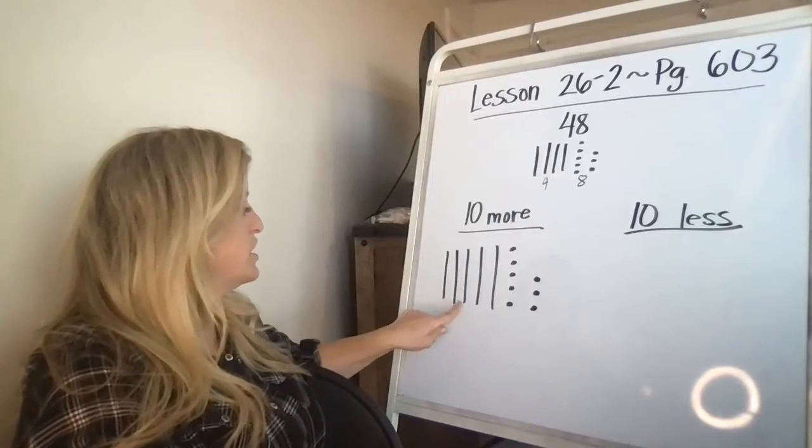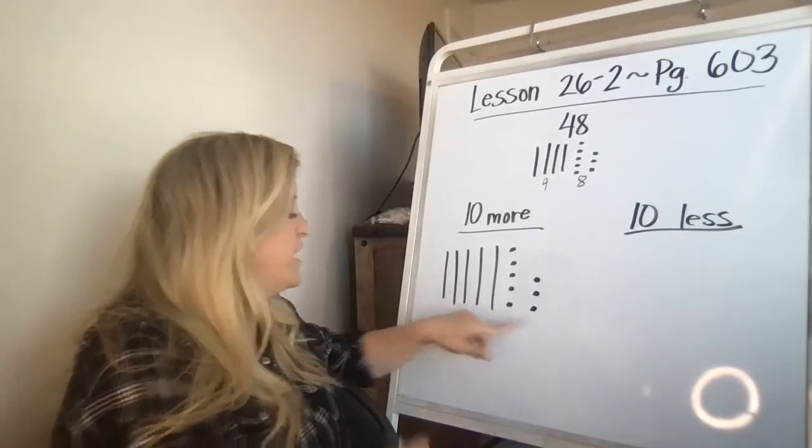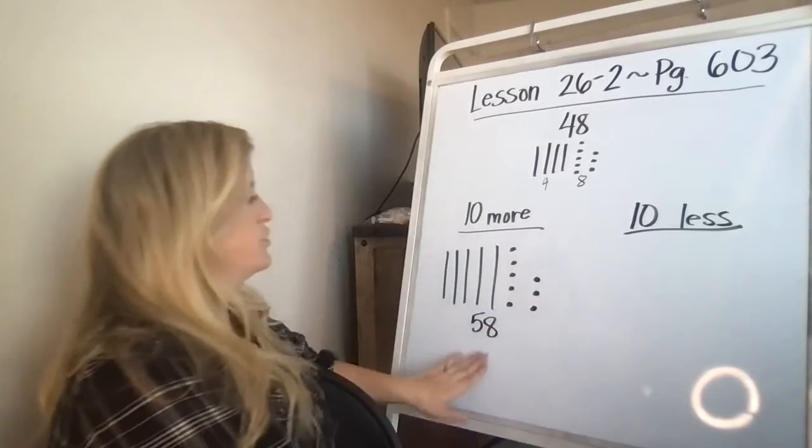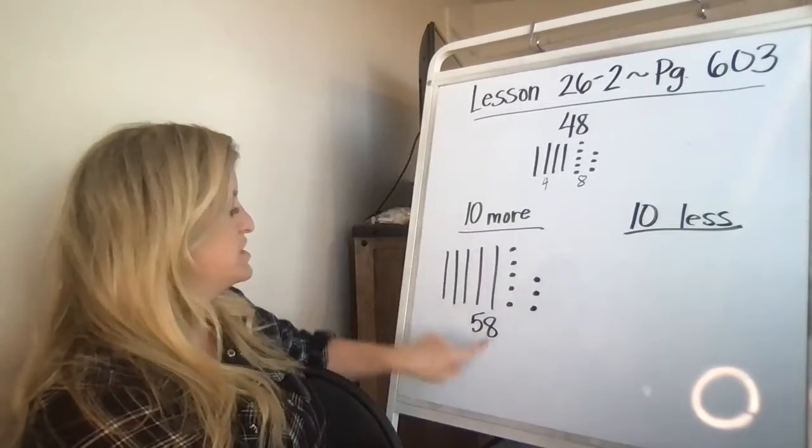So 10 more is 10, 20, 30, 40, 50, and eight. You're not changing the ones at all.